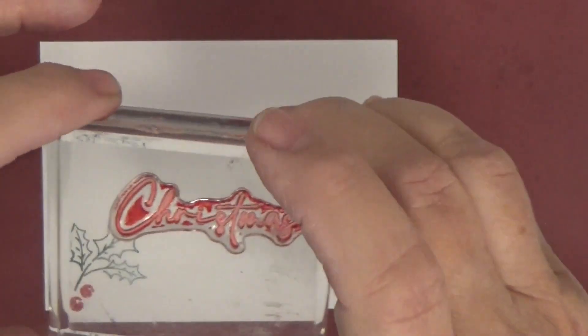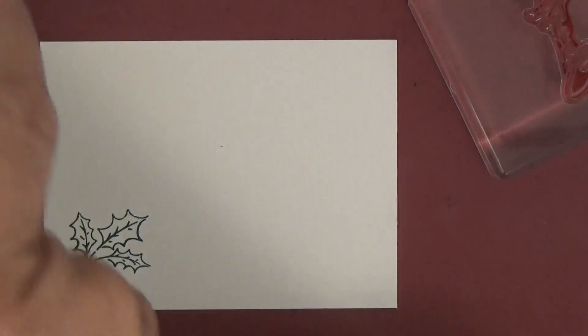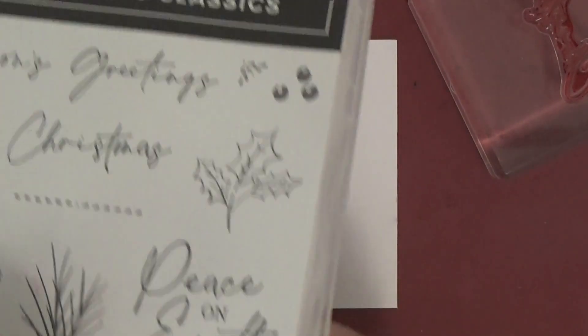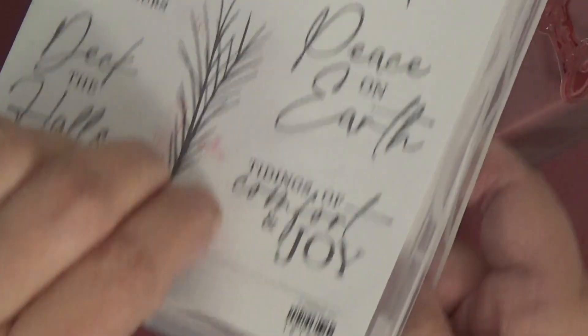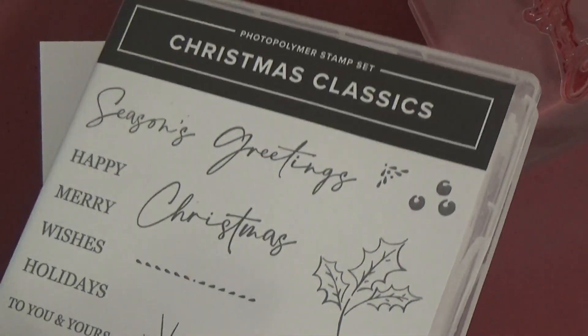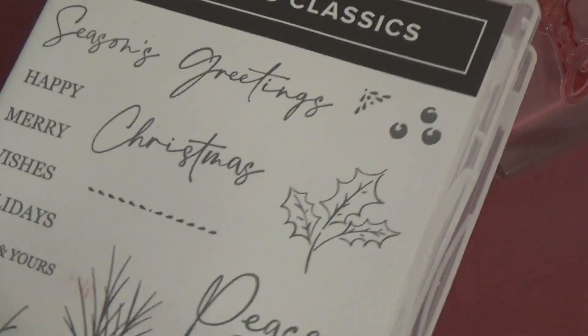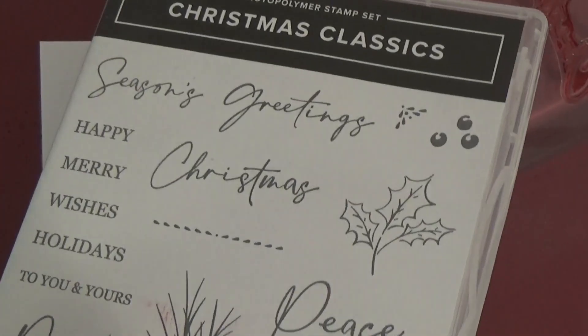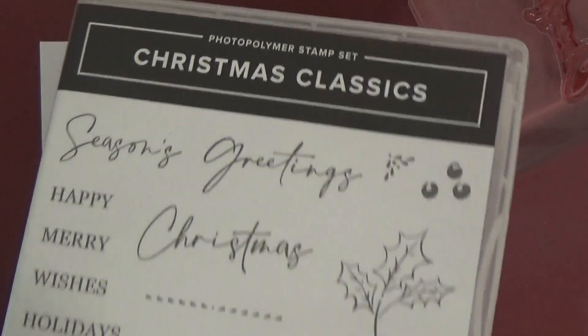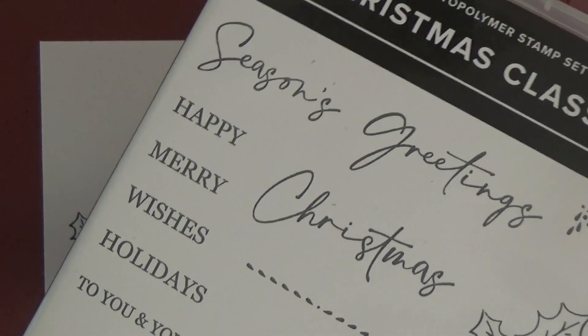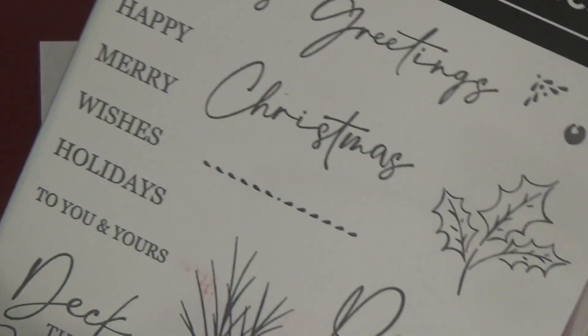Let me explain what this is. These are stamps. This is a Christmas stamp set from Stampin' Up. I happen to be a Stampin' Up demonstrator. I sell these products, but I really don't because no one buys from me, but I buy the stuff myself. This is called Christmas Classics, and you get different sentiments like happy, merry, wishes, holidays to you and yours.